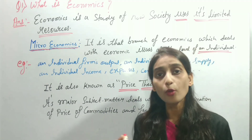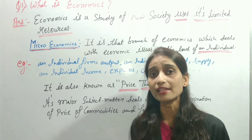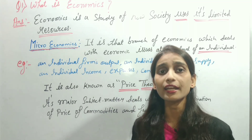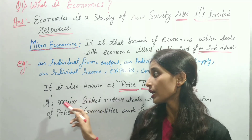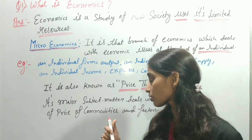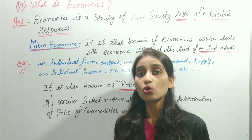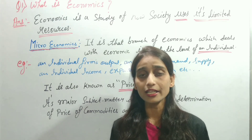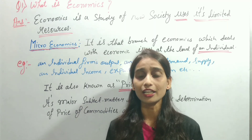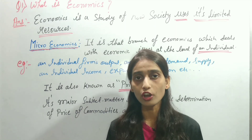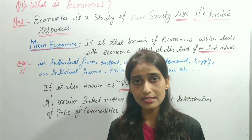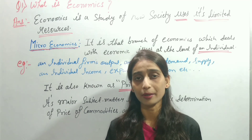Why is it called price theory? Because a lot of its subject matter deals with price determination. Basically, we include it under three headings: the major subject matter deals with the determination of price of commodities and factors. These three headings are: product pricing, factor pricing, and welfare economics. In product pricing, we analyze two things — the theory of demand and the theory of supply — to determine price.